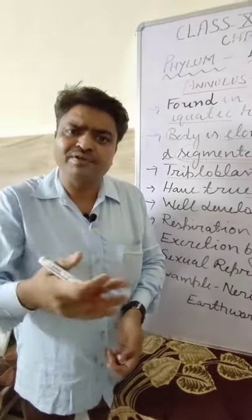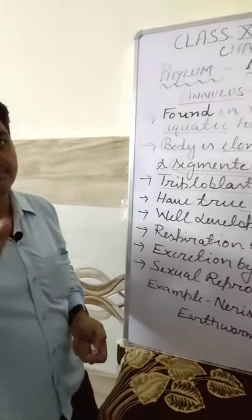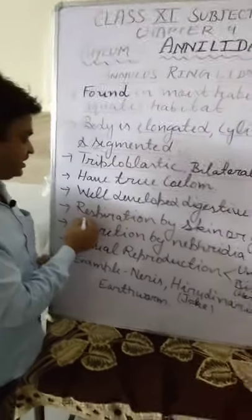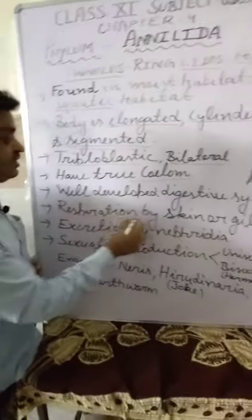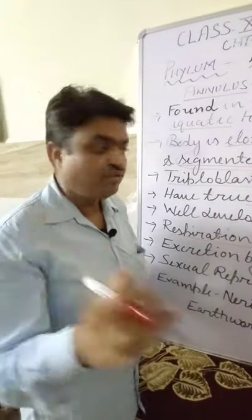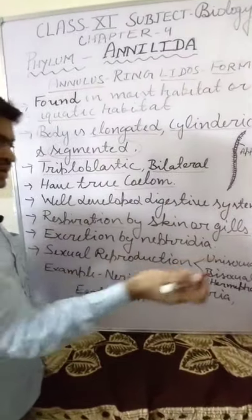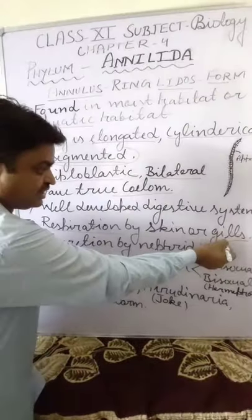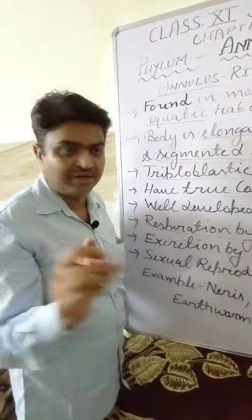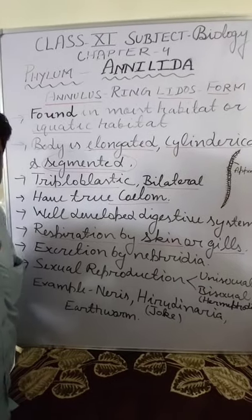They have well-developed digestive organs, and with the help of those they do digestion. For respiration, they do respiration with the help of skin or gills. If they are found inside the water, then they do respiration with the help of gills. If they are found inside the soil, then they do respiration with the help of their moist skin.